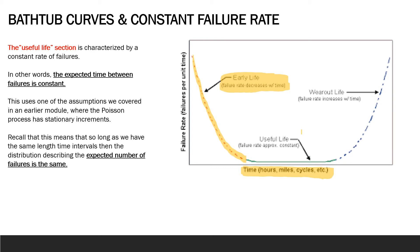And then you reach this middle portion where you reach a useful life period where reliability is roughly constant, so the failure rate is not changing. It's this horizontal line.